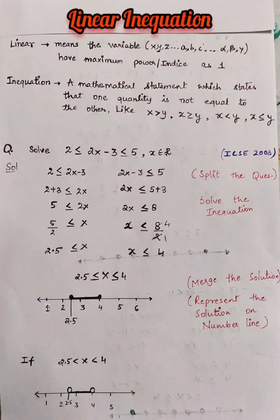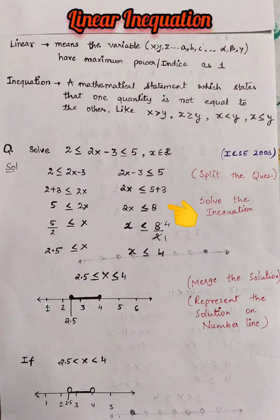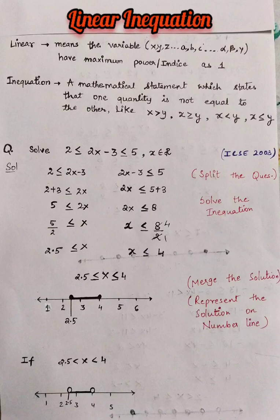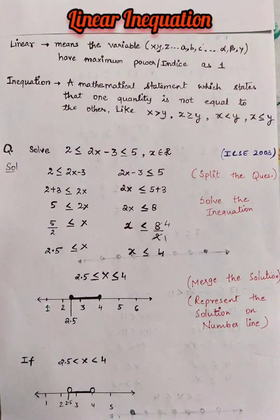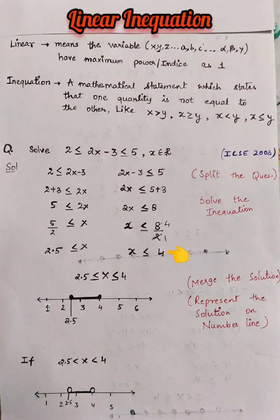Let's solve the second inequation: 2x − 3 ≤ 5. We transfer −3 to the other side of the symbol, which becomes +3, so 2x ≤ 8, and therefore x ≤ 8/2, giving us x ≤ 4.